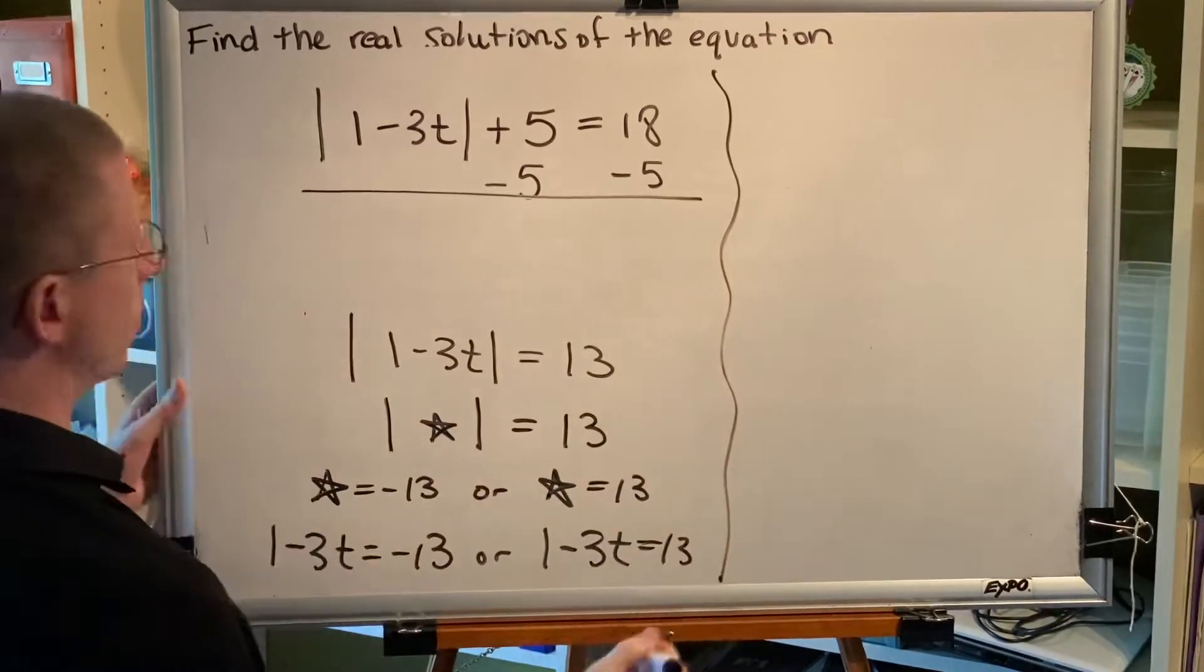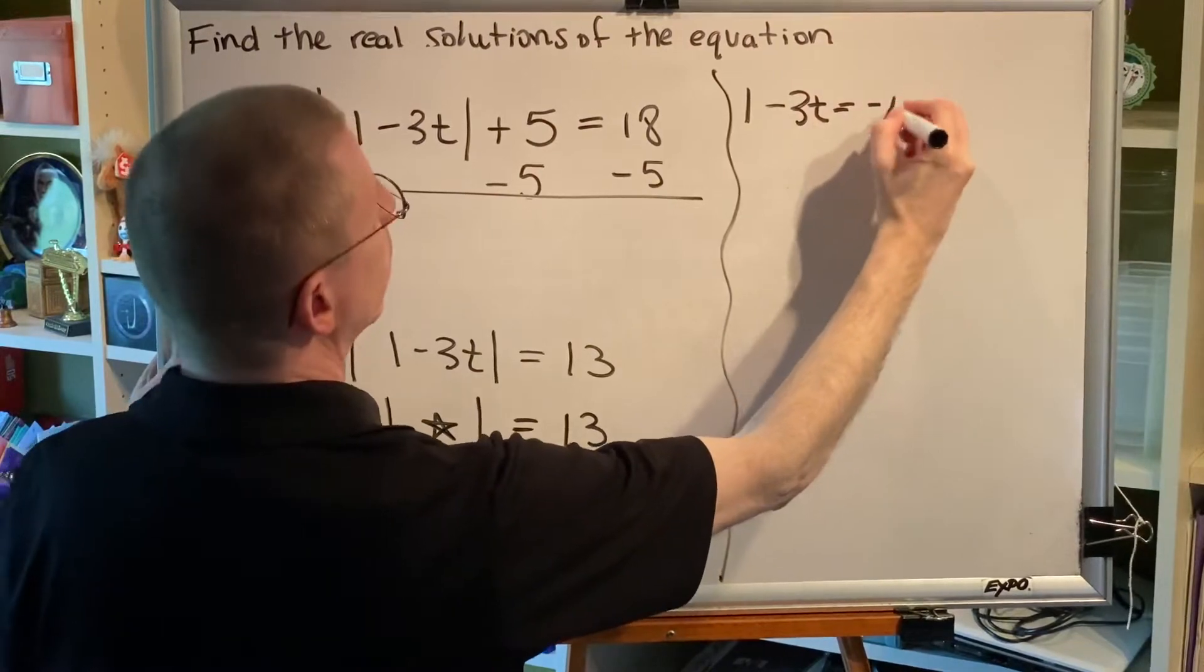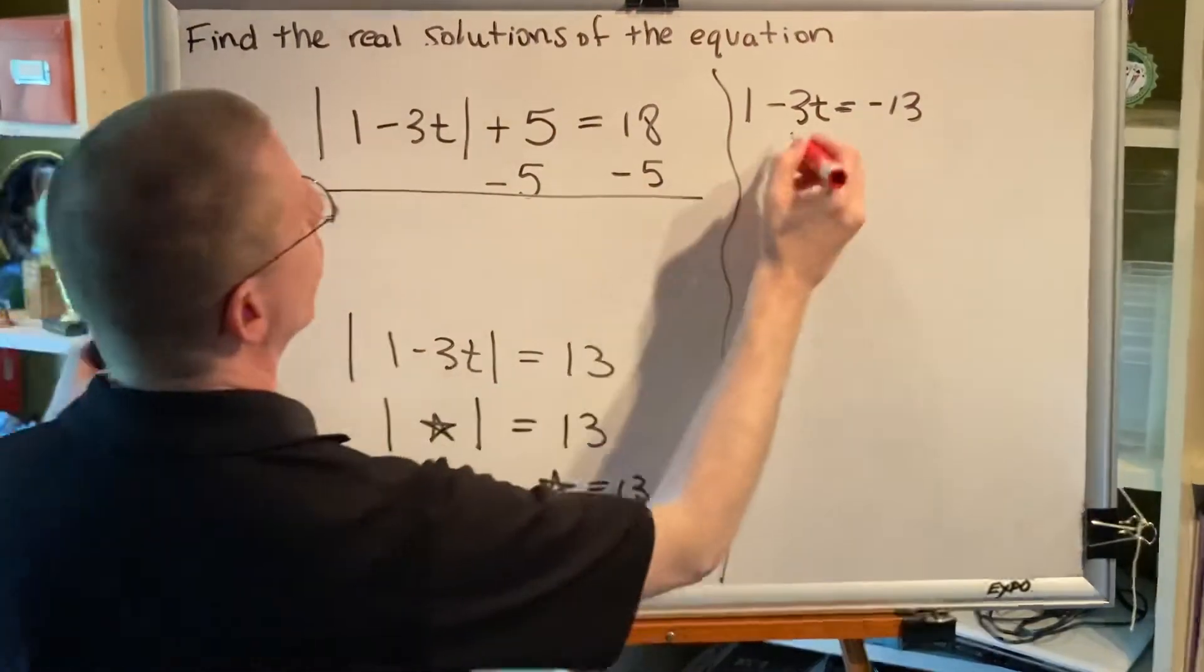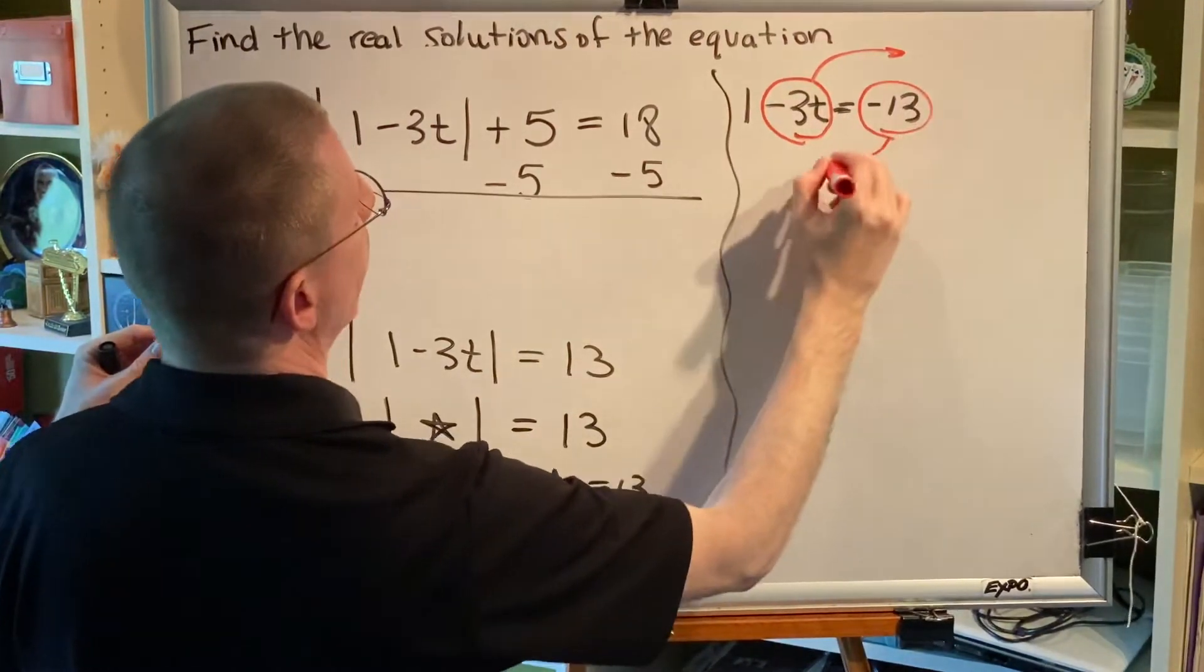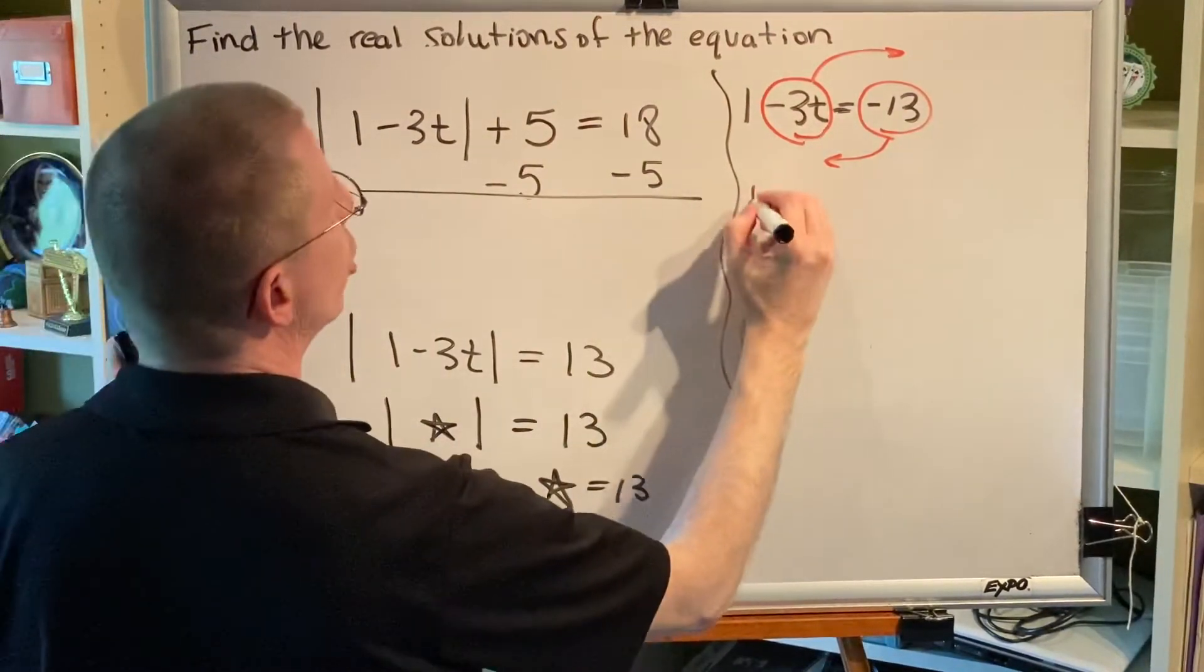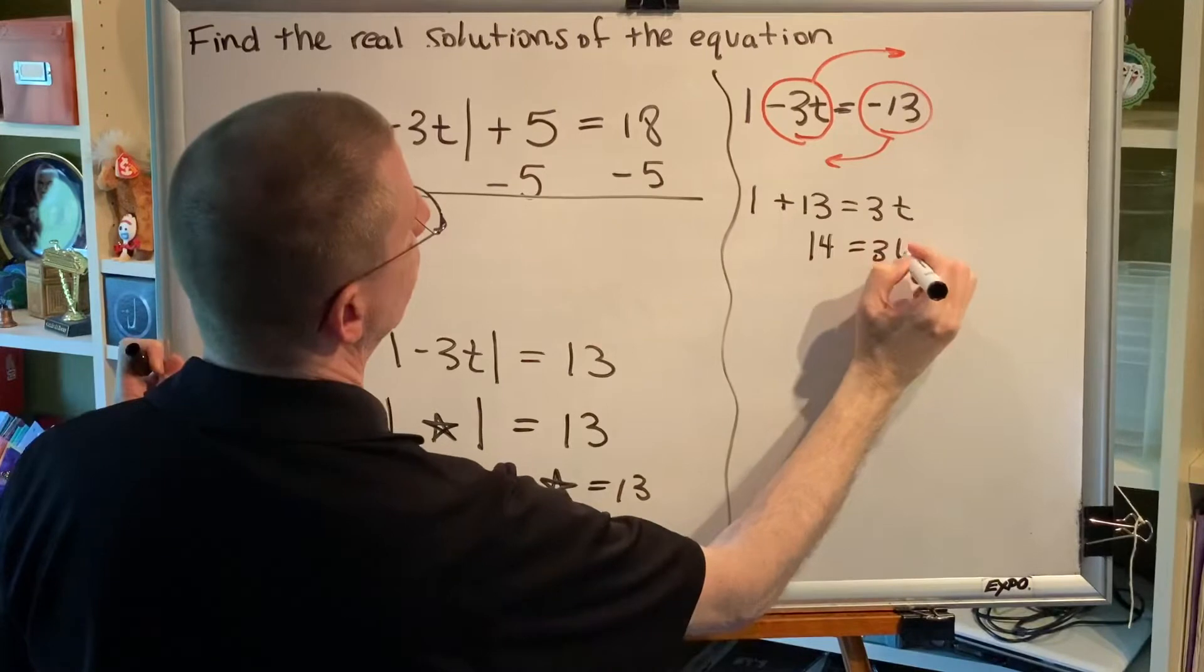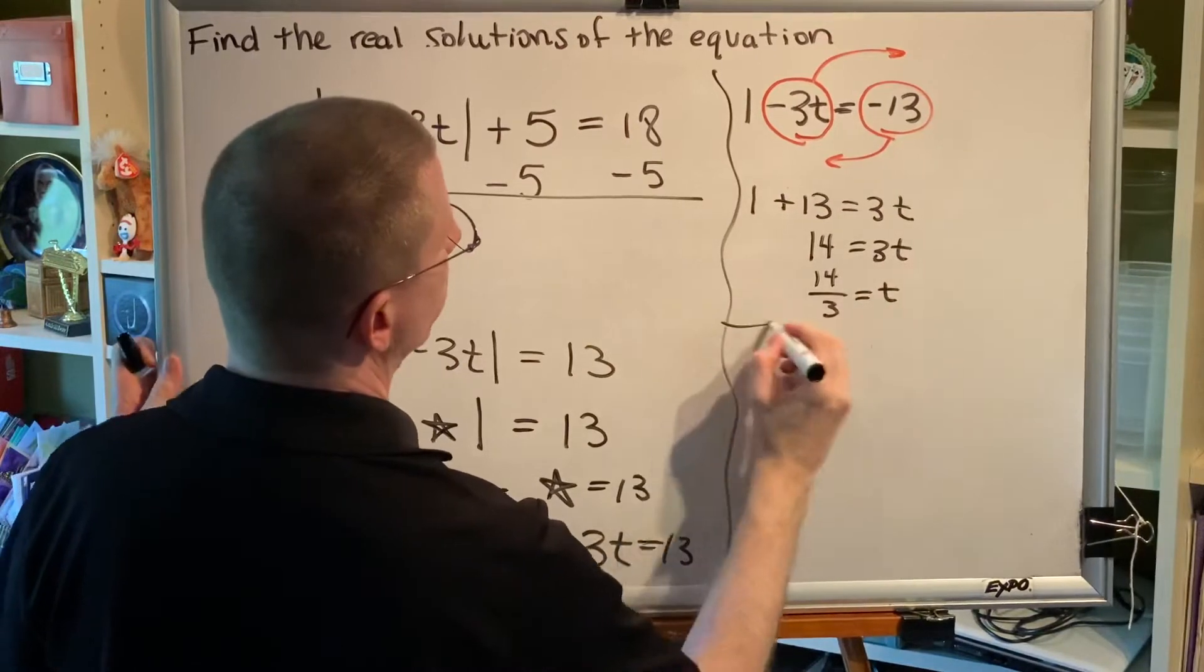Let's solve both of those equations. Okay, beginning with the first one, I want all terms with the variable on one side and all terms without on the other. So, I'm going to pick this up and move it over here. When a term changes sides, it changes signs. So, I get 1 plus 13 equals 3t. 14 equals 3t. Divide by 3 on both sides. 14 thirds equals t. That's one solution.